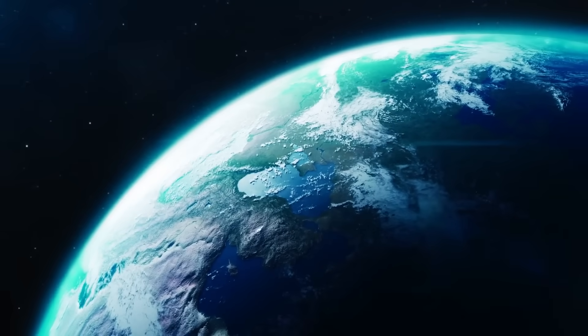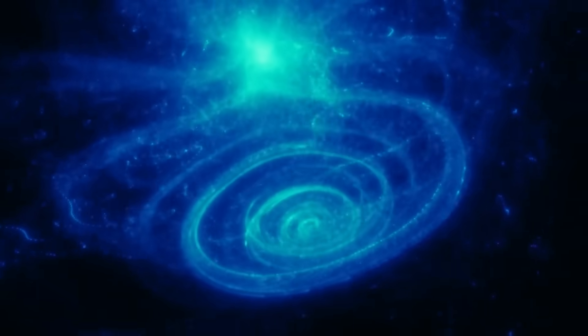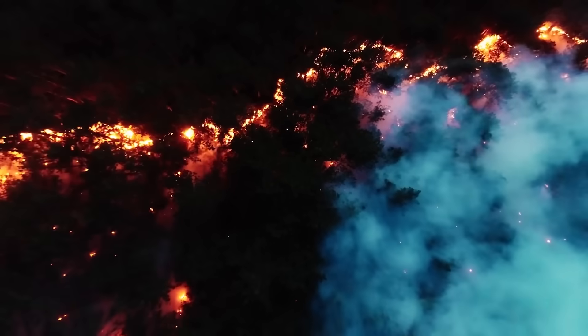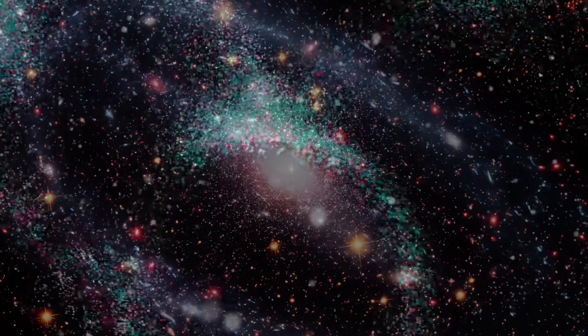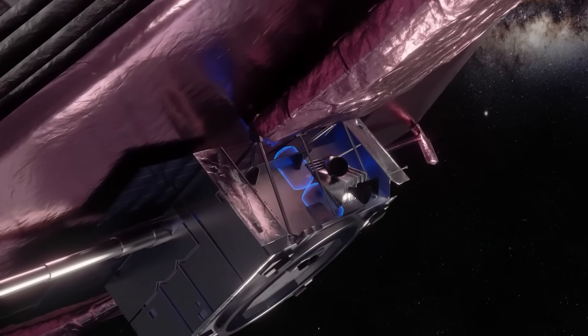More frightening than what it resembled was where it was located. The coordinates matched a cold spot in the cosmic microwave background, an area long thought to be a statistical anomaly, devoid of galaxies and stars. But now, it looked more like a lock, a vault, a geometric construct encoded into the fabric of the universe itself. And if it's a vault, what's inside it?